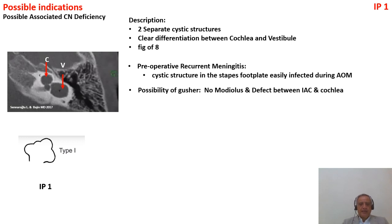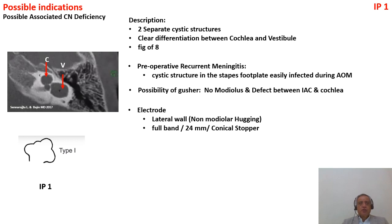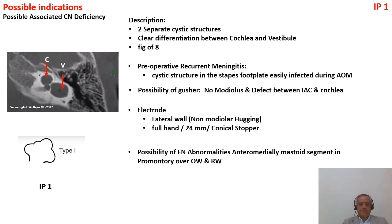In IP1, there is no modulus, so there is a possibility of gusher. Do not use a modular-hugging electrode; use a lateral wall electrode, full band, with a normal 24 mm length since the cavity can accommodate it. Use a conical stopper because of the gusher risk. Also note the possibility of cochlear nerve deficiency and abnormal facial nerve, which can make surgery more difficult.